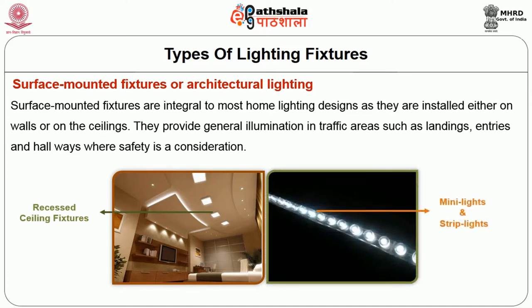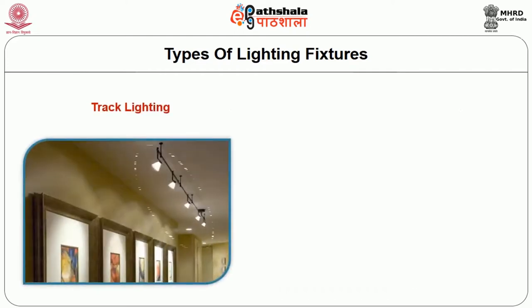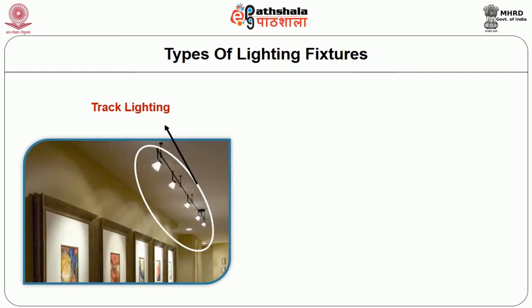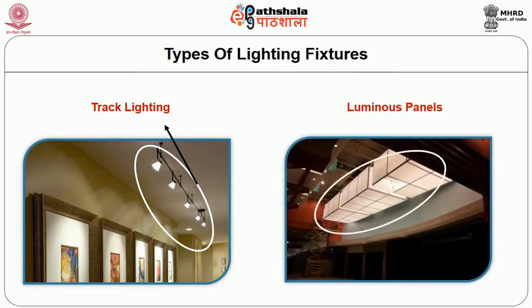Mini lights and strip lights are used for fun as well as for effective task lighting. They can highlight high windows and other architectural features, adding color along with a splash of light. Track lighting offers great versatility of installation as it is available in varying lengths. Luminous panels are strips or lines of light, usually fluorescent, over which glowing glass or plastic translucent panels are placed. A light placed behind a built-in or portable feature represents built-in indirect lighting.